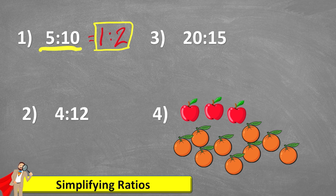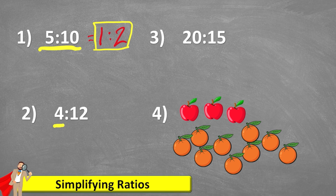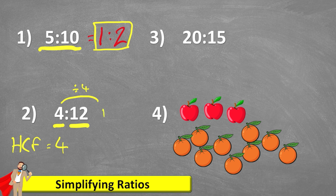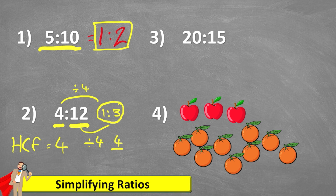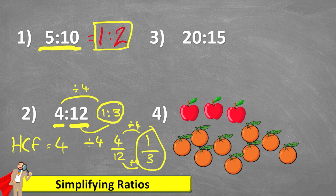Let's have a look at question 2, just using the written method now. My ratio is 4 to 12. Again, I'm going to look for my highest common factor, and the highest common factor of 4 and 12 is 4. So if I divide my 4 by 4, I'll be left with 1. And if I divide my 12 by 4, I'll be left with 3. So 4 to 12 is equivalent to 1 to 3, which is its simplest form. We can double-check with the fraction version: 4 over 12 — 4 divided by 4 is 1, and 12 divided by 4 is 3 — so 1 over 3 is the same as saying 1 to 3.